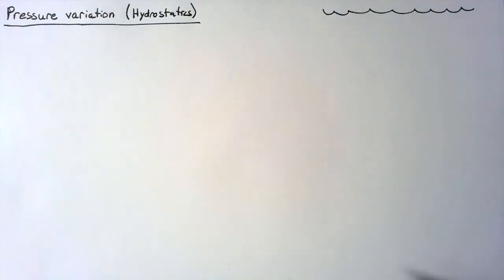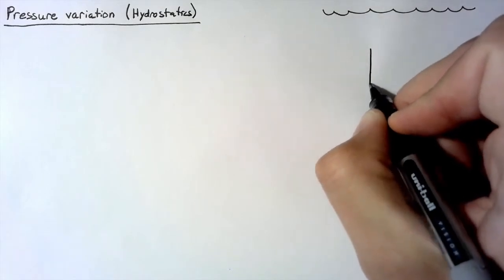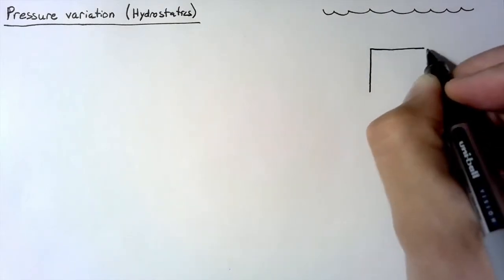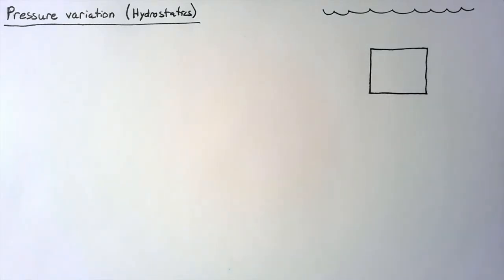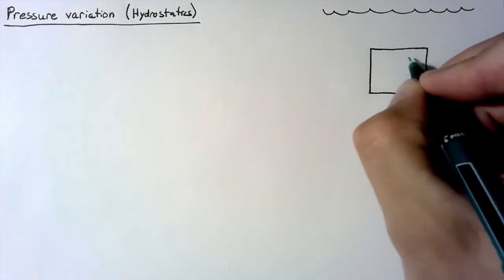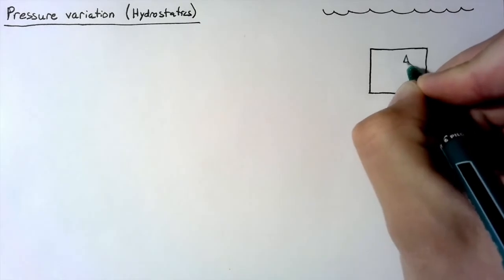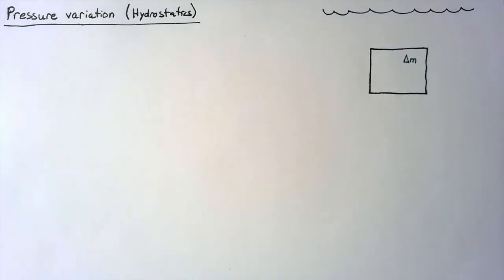We're interested in some fluid, and we're going to be analyzing what we call a differential fluid element, which is just a small piece of the fluid below. I'm going to say that this is some delta m, which just means some differential mass.